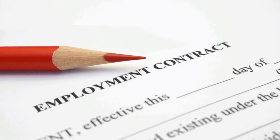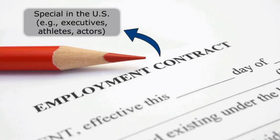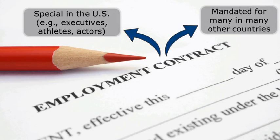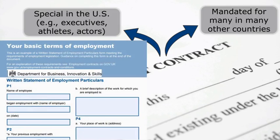A second difference is employment contracts. In the United States, we see employment contracts as really focused on very special situations, like top executives, professional athletes, actors, and things of that nature. In many other countries, employment contracts are actually required for many employees. In China, an employer is required to give each full-time worker a contract specifying the length of employment, the worker's job description, and some other details. In Great Britain, an employer must give employees a written statement of employment particulars, which gives the pay, hours of work, holiday entitlement, pensions, and other types of things. So this is a big difference between the United States and many other countries in the rest of the world.